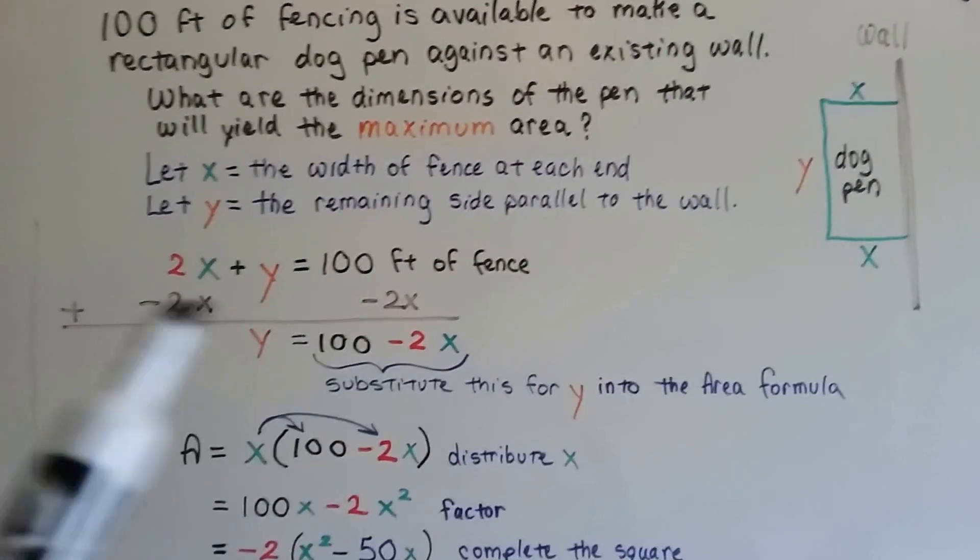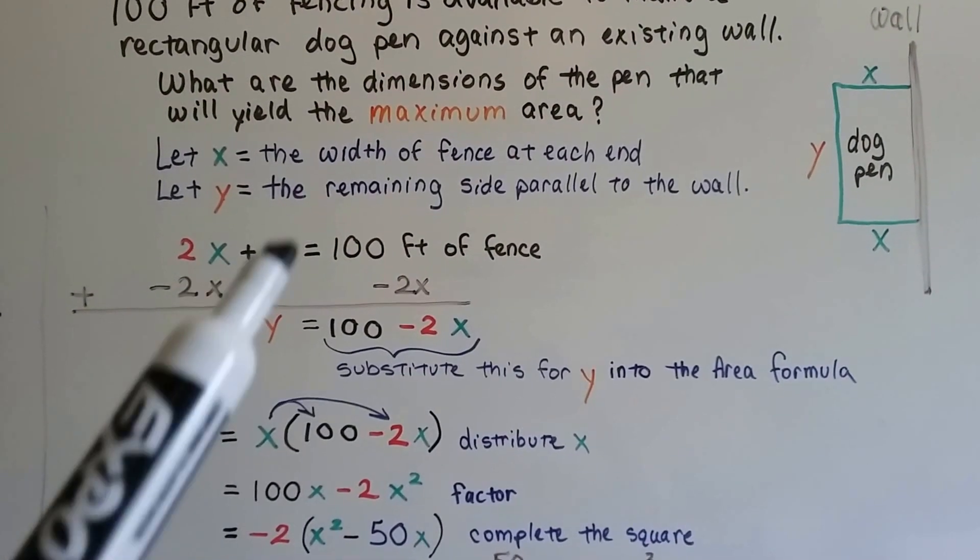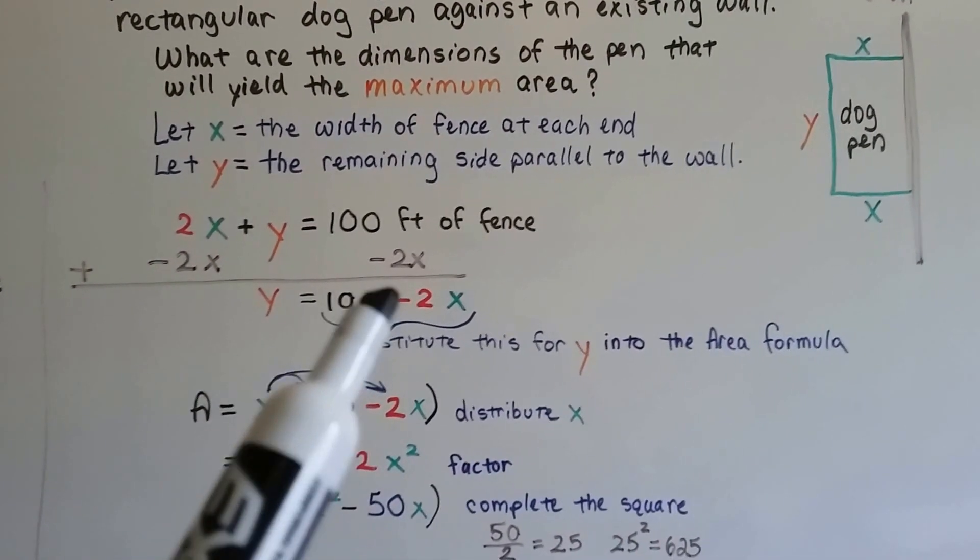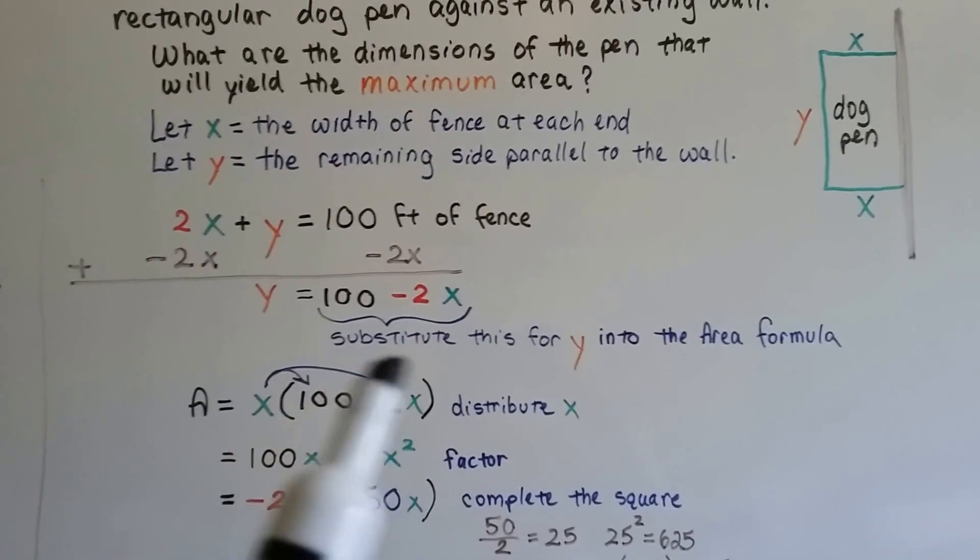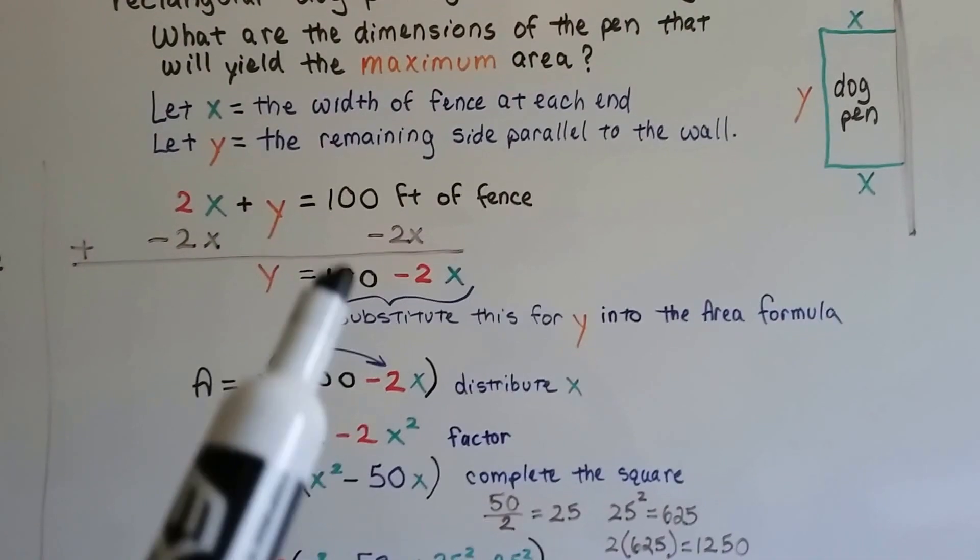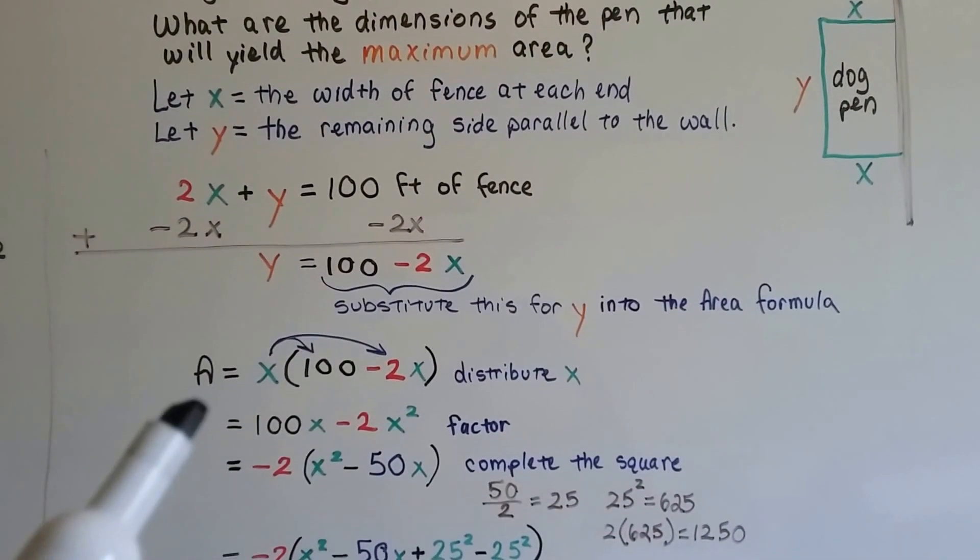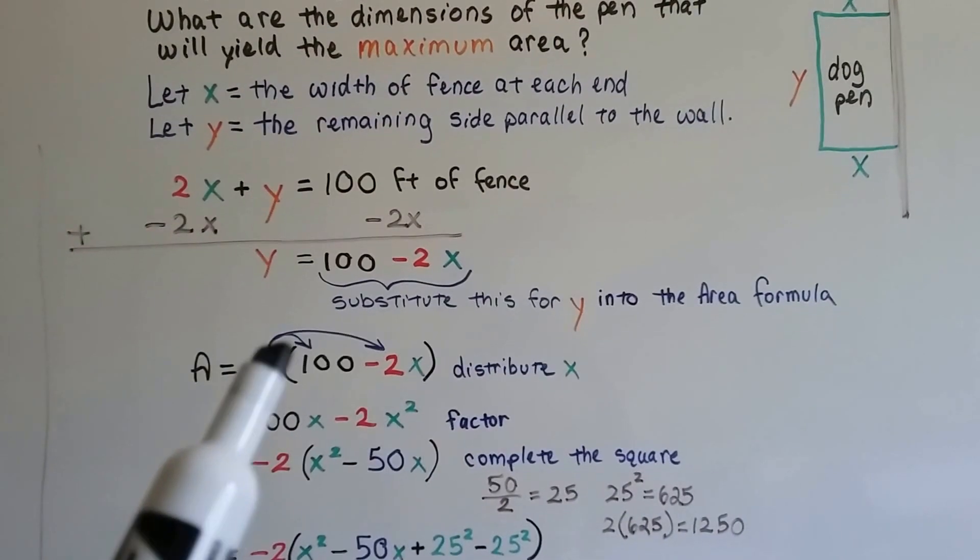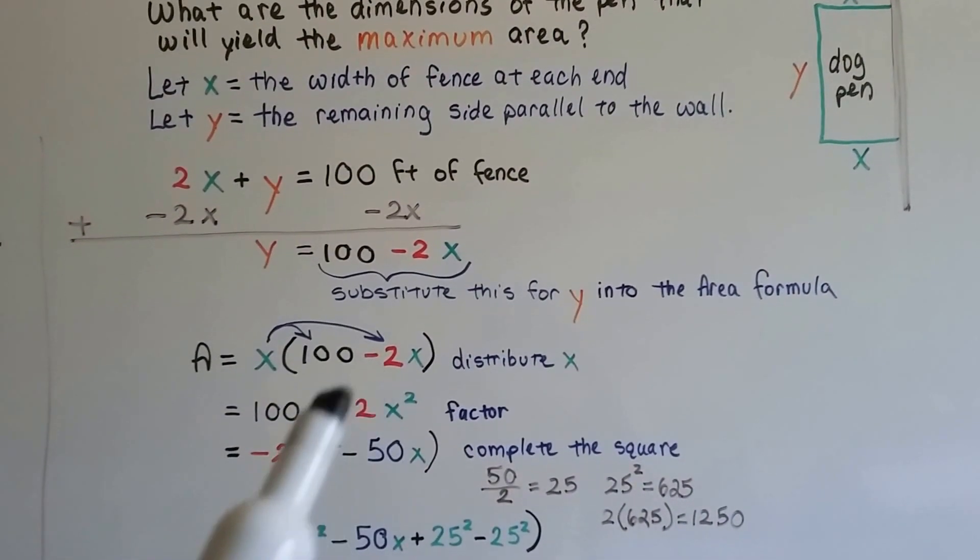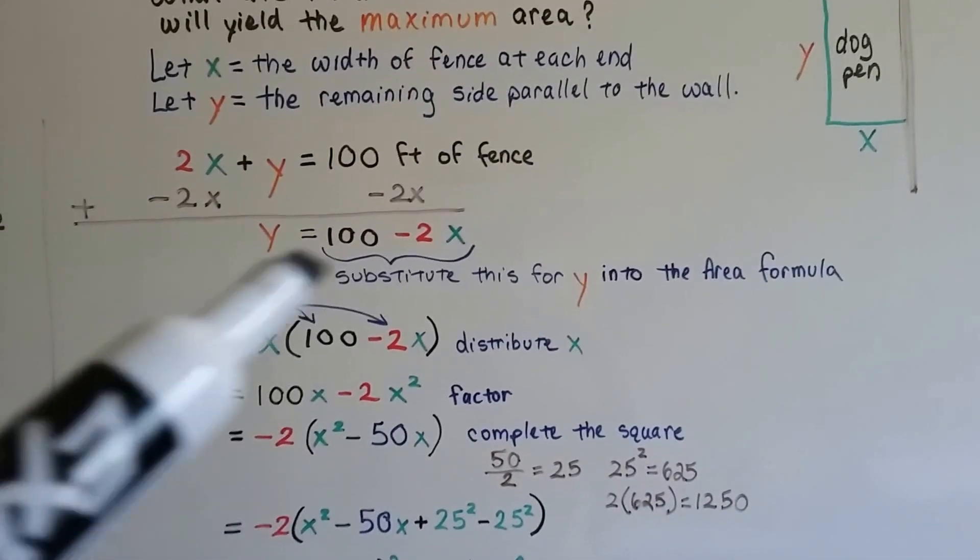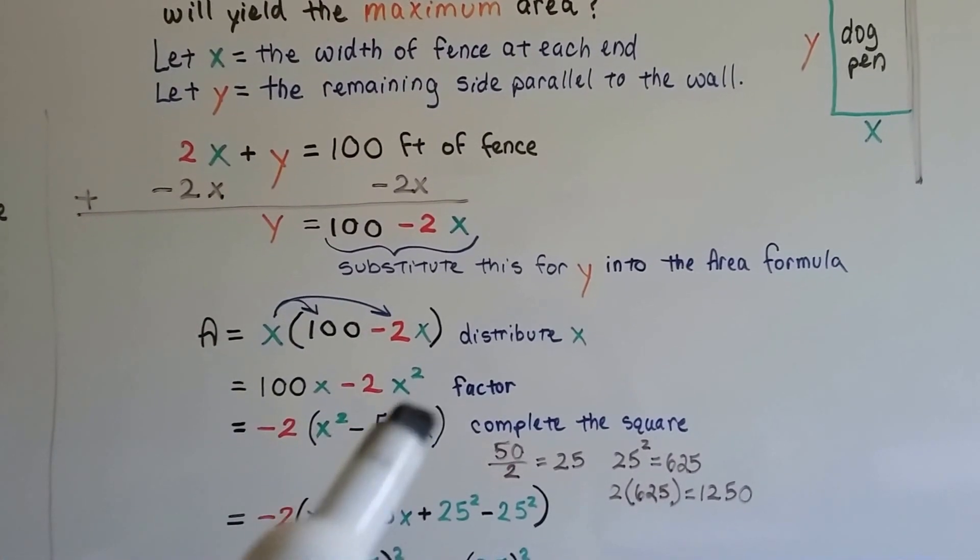We can add -2X to each side of the equation to isolate Y, and we get Y = 100 - 2X. Now we can substitute this for Y into the area formula, 100 - 2X. So instead of XY, we've got X(100 - 2X). We can distribute this X and we get 100X - 2X².